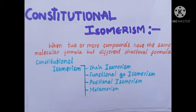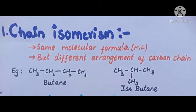They are chain isomerism, functional group isomerism, positional isomerism, and metamerism. First we learn about chain isomerism. Chain isomerism involves compounds having the same molecular formula but different arrangement of carbon chain. For example, butane and isobutane — here the arrangement of the carbon chain is different.